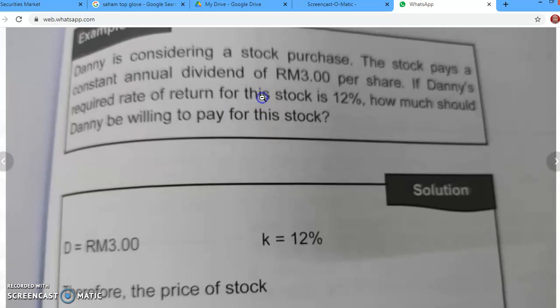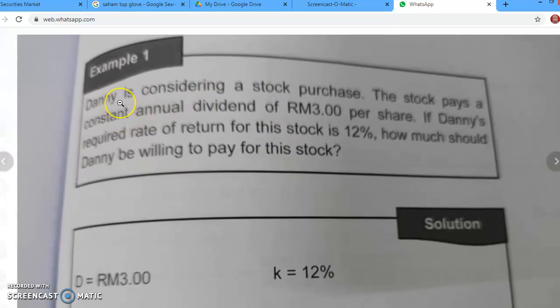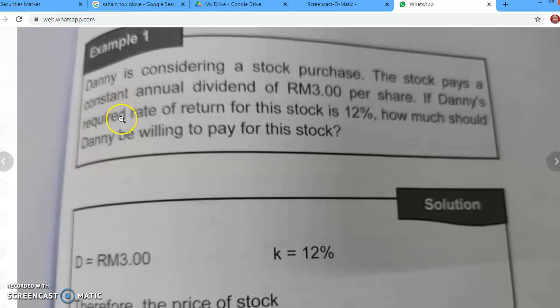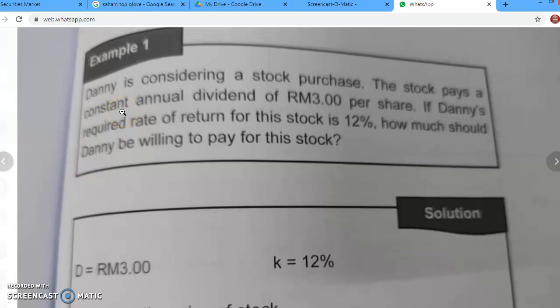This is the question. Danny is considering a stock purchase. The stock pays a constant annual dividend of RM 3 per share. If Danny's required rate of return for this stock is 12%, how much should Danny be willing to pay for this stock?